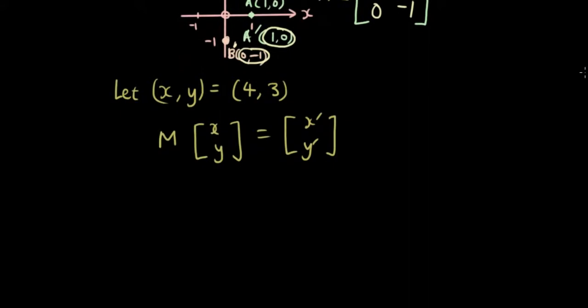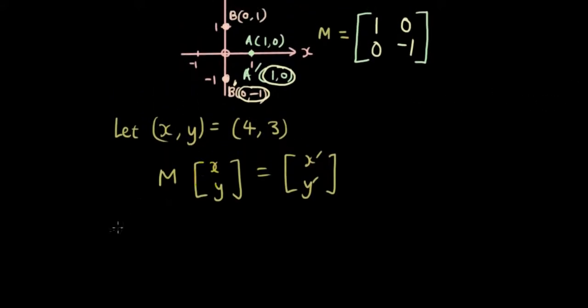So let's try doing that over here. So M is 1, 0, 0, negative 1. And if we multiply that by 4 and 3, which is our original point, let's see what x dash and y dash equals.